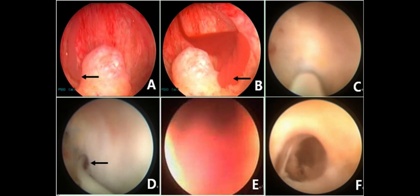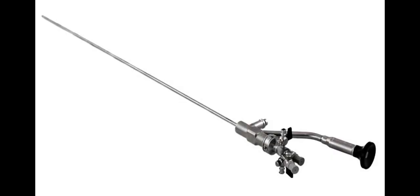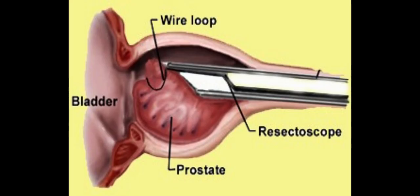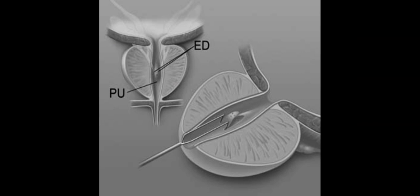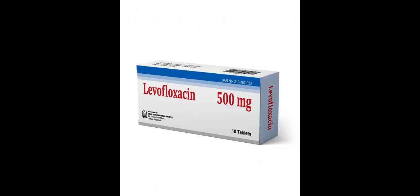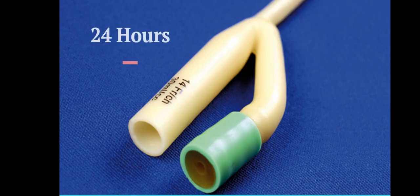More recently, transurethral endoscopy and vesiculoscopy have been used to both diagnose and treat hematospermia and ejaculatory duct obstruction. This procedure is completed by passing a 6 French or 7 French ureteroscope retrograde through the orifice of the verumontanum over a guidewire. The ejaculatory duct orifices are then visualized and the membrane covering the orifices is punctured with a guidewire. The ureteroscope is passed into the seminal vesicles, after which a levofloxacin wash is directly injected into the seminal vesicles, and a Foley catheter is left for 24 hours.